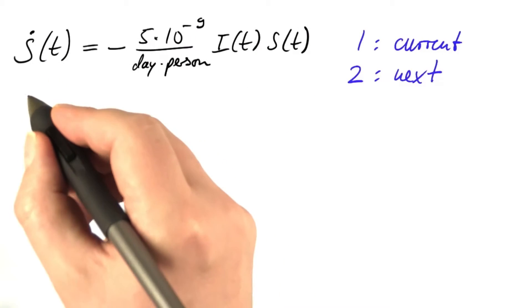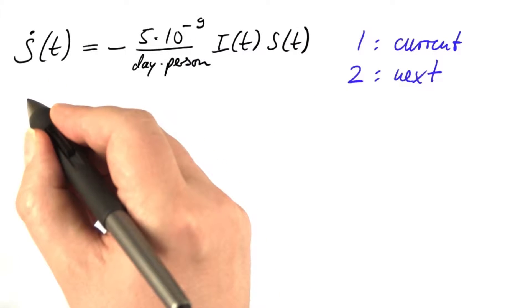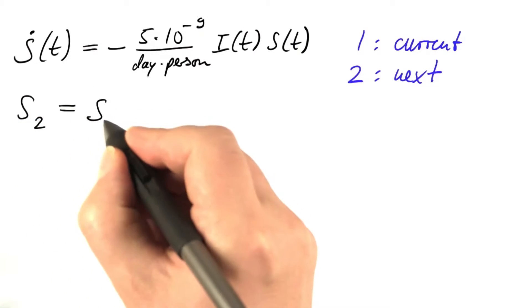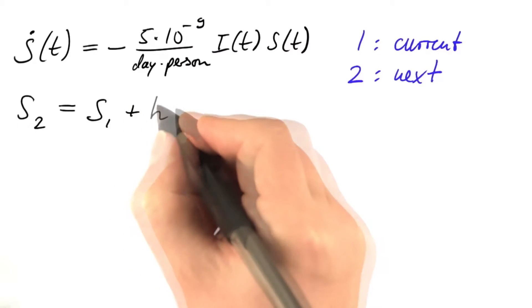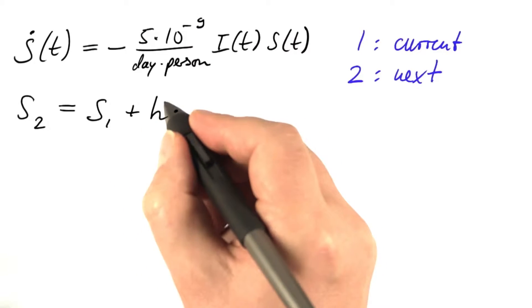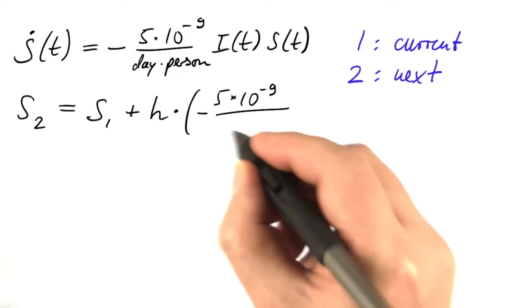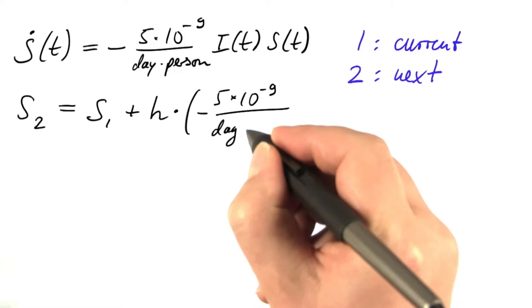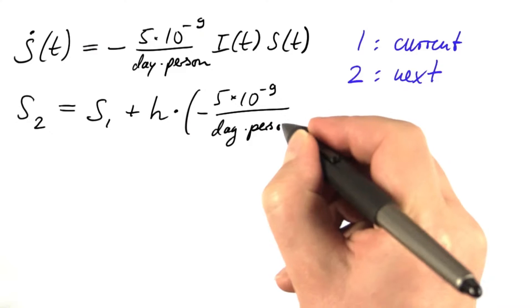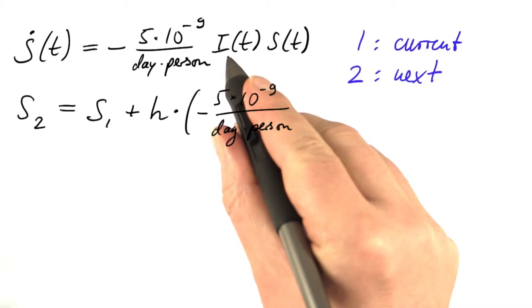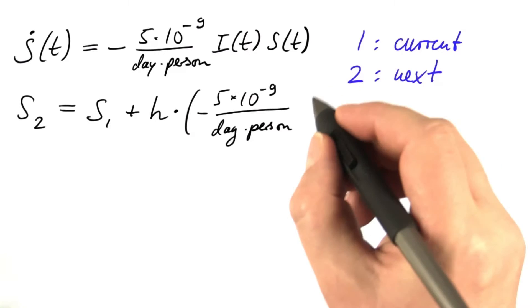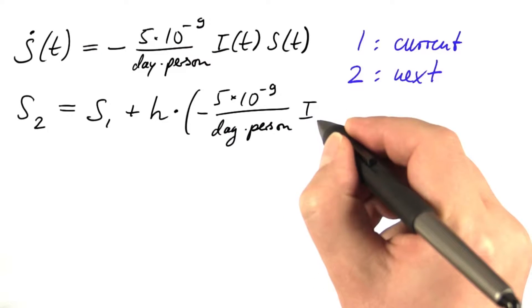Next up is s. If we were using the forward Euler method, this would work as follows. The next value of s is its current value plus the time step times its current rate of change, meaning minus 5 times 10 to the minus 9 per day and person times i at the current step, s at the current step.